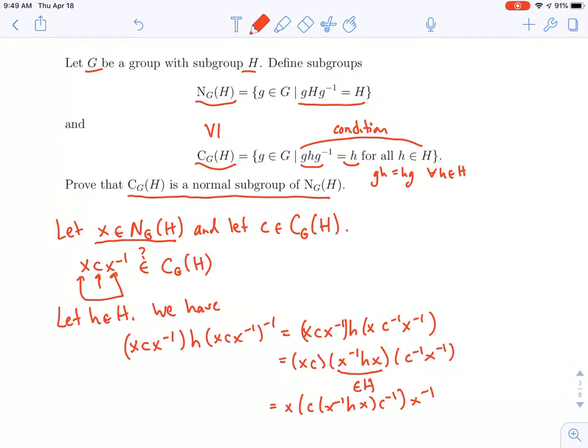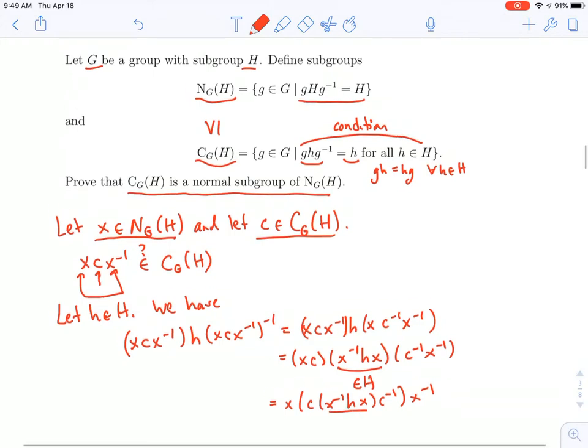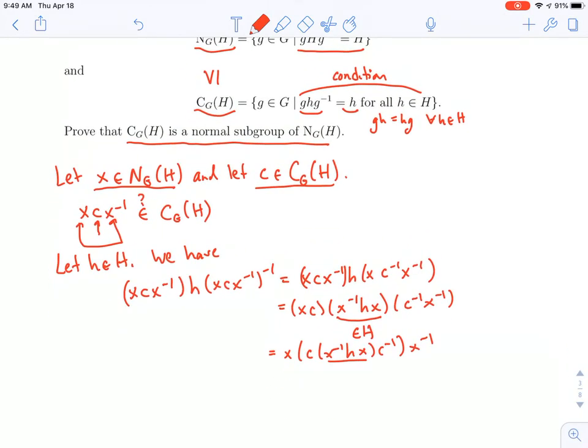But c came from the centralizer. C centralizes h, which means when I conjugate anything in h, in particular this x inverse hx, I get back the same element. So I can just drop the c's. So I get x, and then x inverse hx, x inverse.